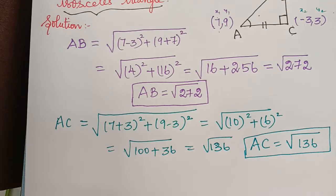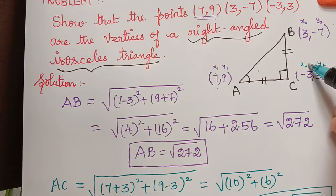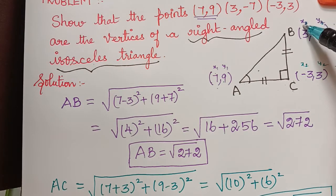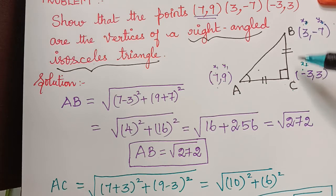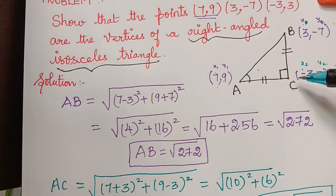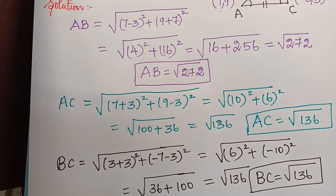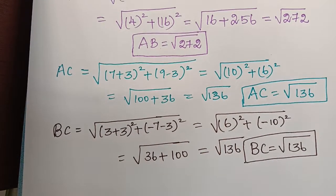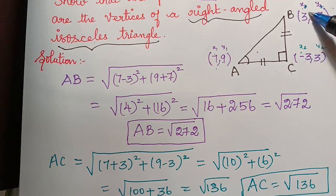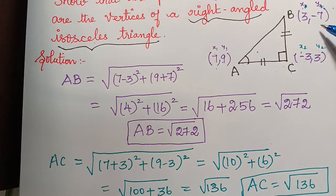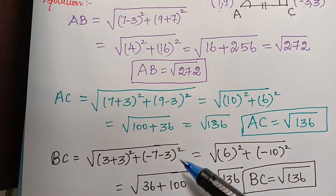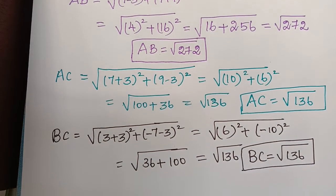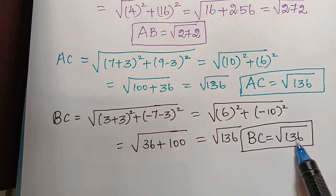In a similar way, we find BC. Taking B as (x1,y1) and C as (x2,y2), BC equals the square root of (3−(−3))² + (−7−3)², which is (6)² + (−10)² = square root of 36 + 100 = square root of 136. Therefore BC = √136.